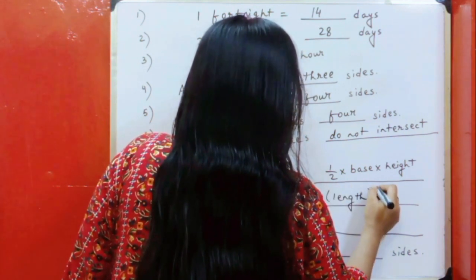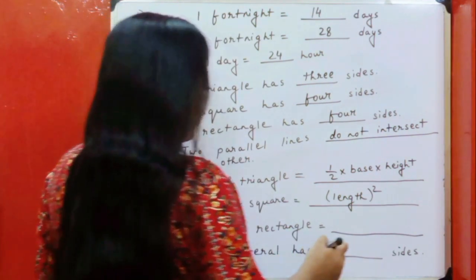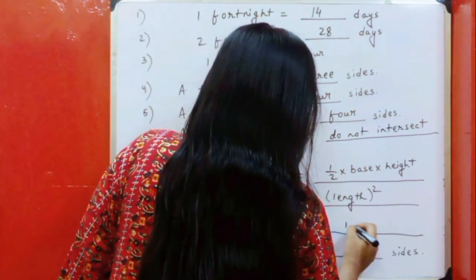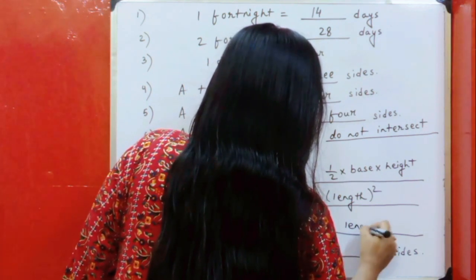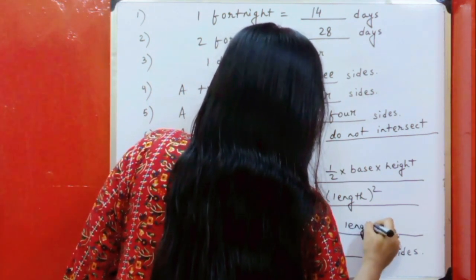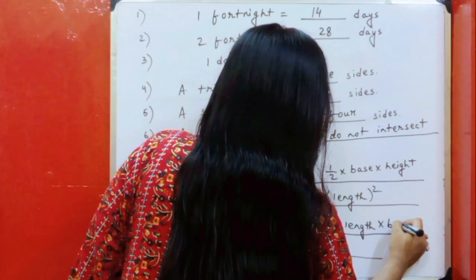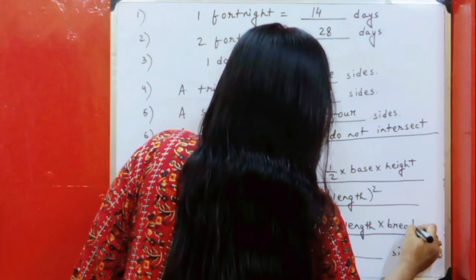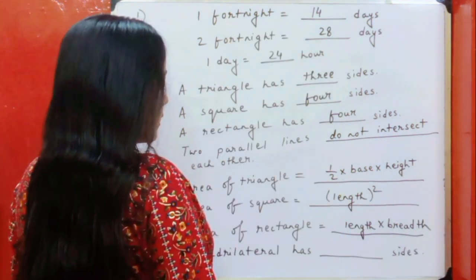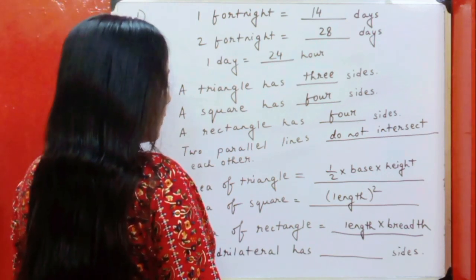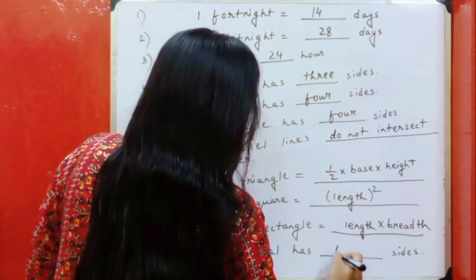Two parallel lines do not intersect each other. Area of square is equal to square of length. Area of rectangle is equal to length multiplied by breadth. Quadrilateral has four sides.